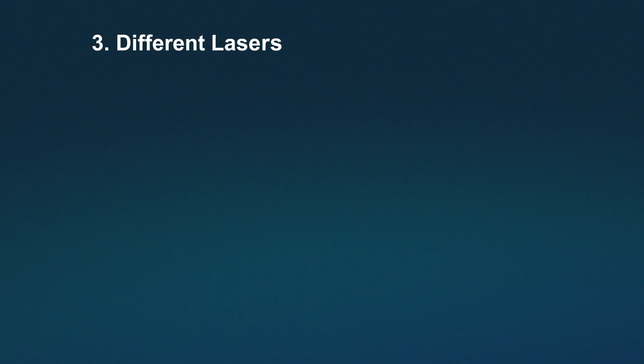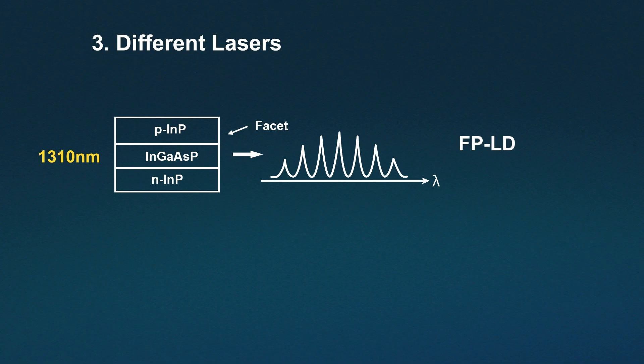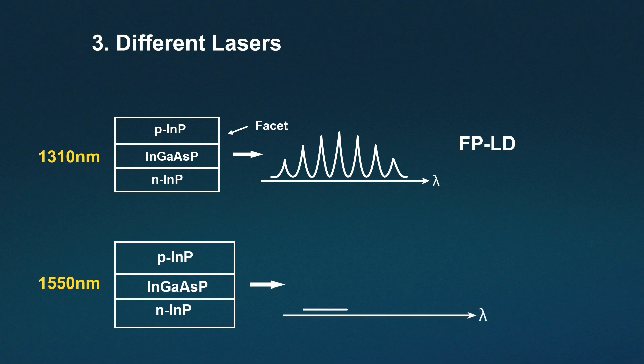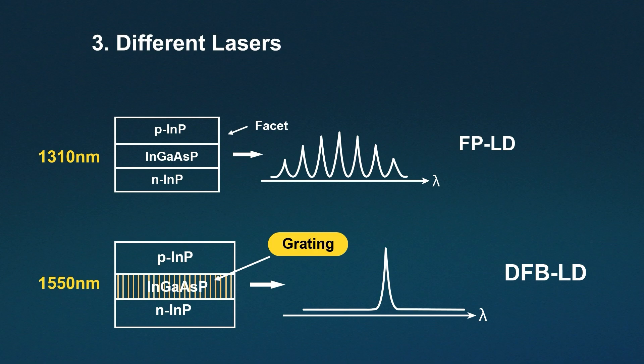Additionally, they use different types of lasers. 1310 nanometer modules typically use FP lasers, which have a simpler structure and lower cost. 1550 nanometer modules usually employ DFB lasers, which add a grading structure to the P-laser design, enabling narrower spectral line width and higher side-mode suppression ratio.